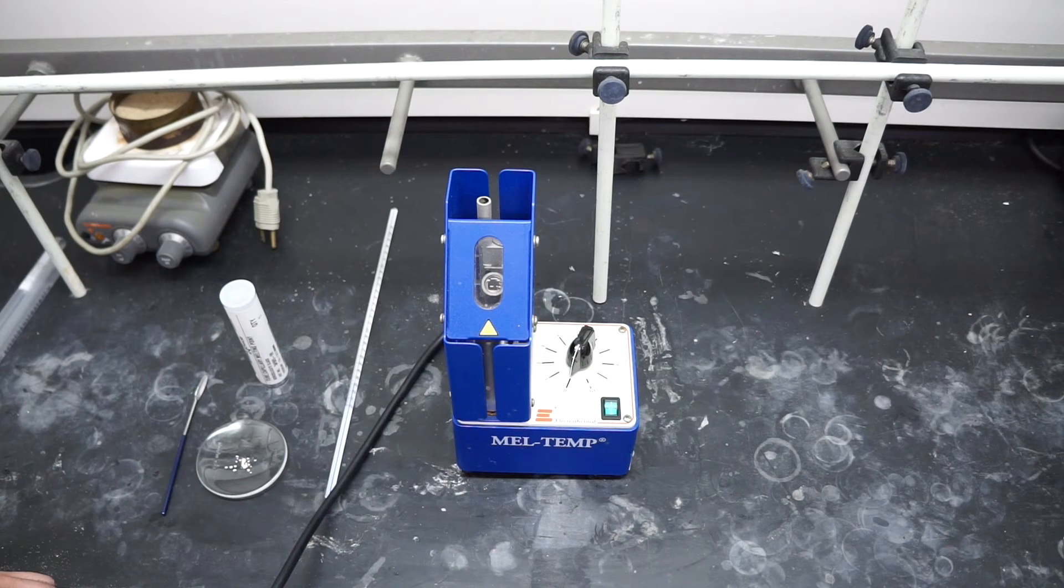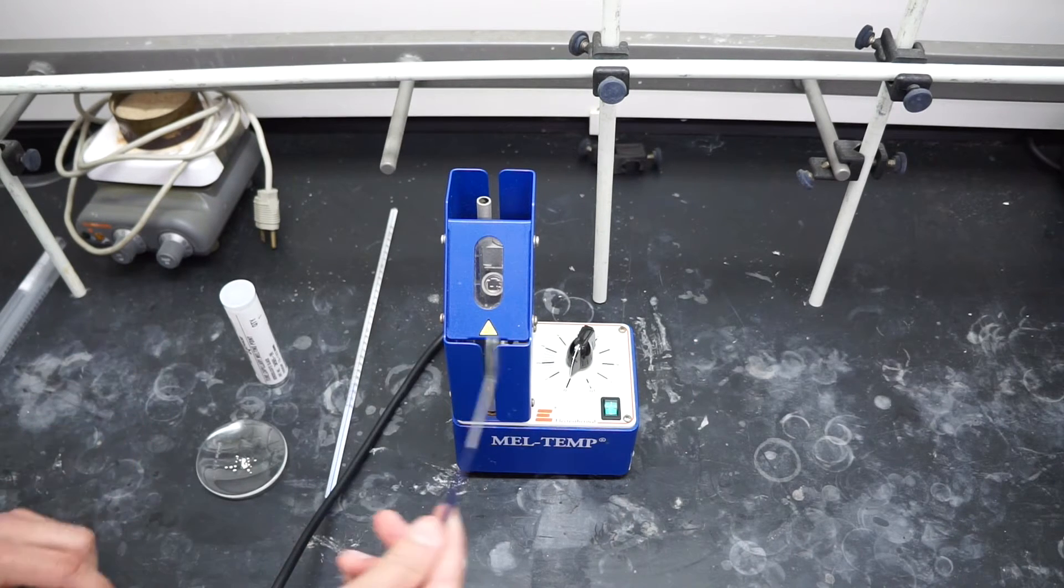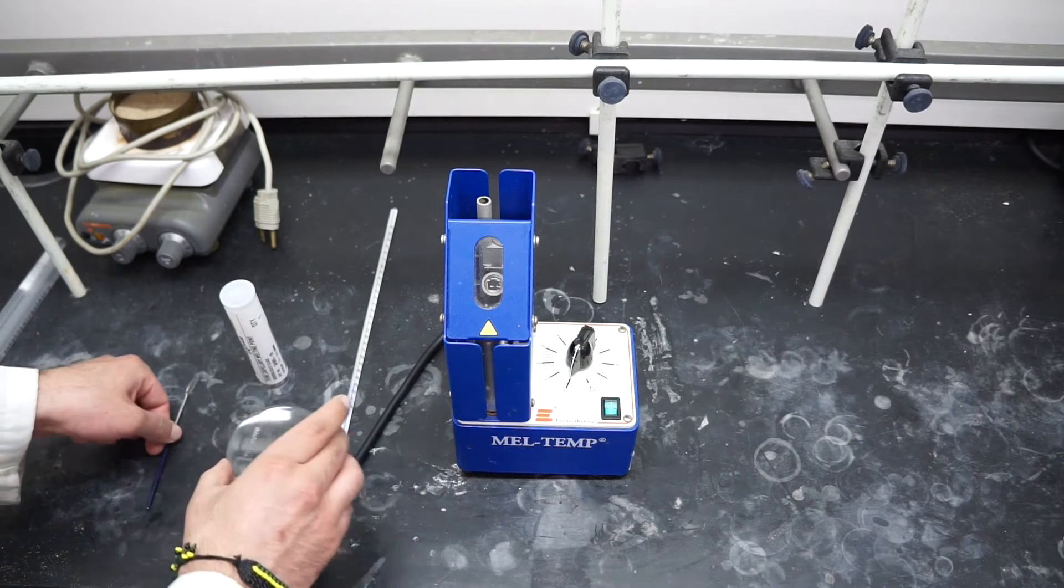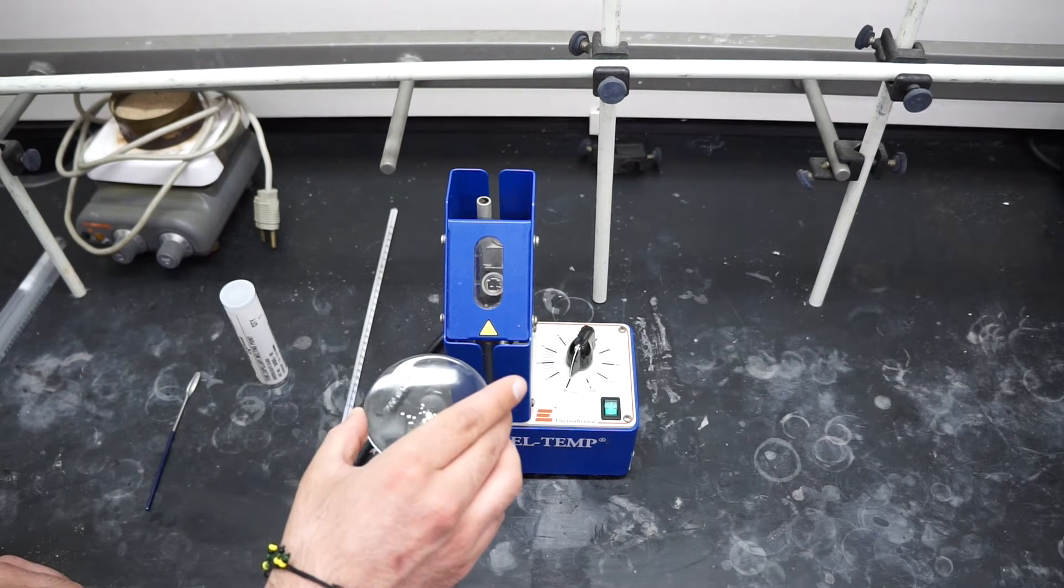Alright, so what you're going to need for this experiment is, number one, a little spatula. Number two, usually a watch glass and a powder sample.